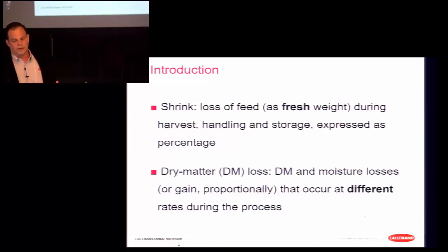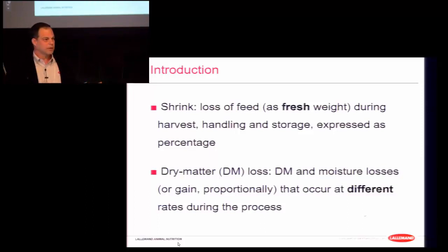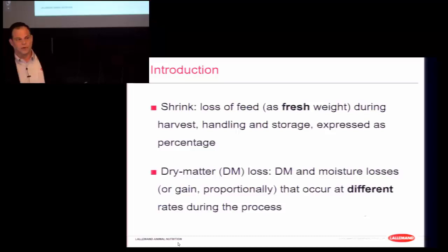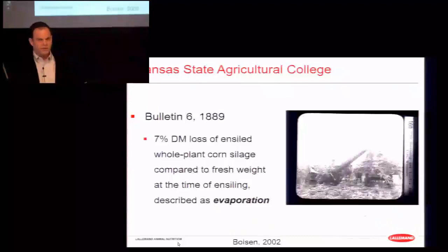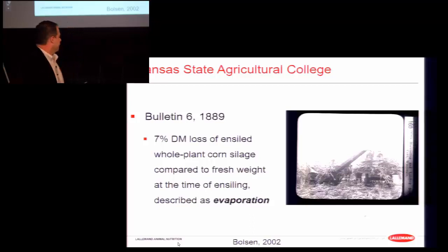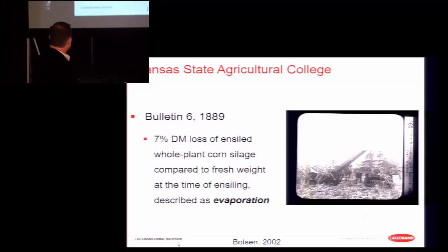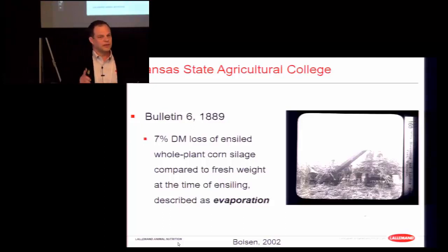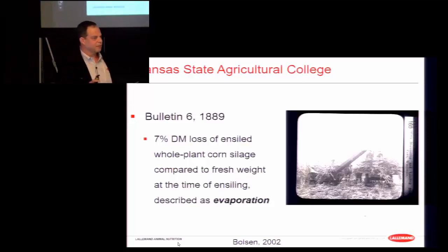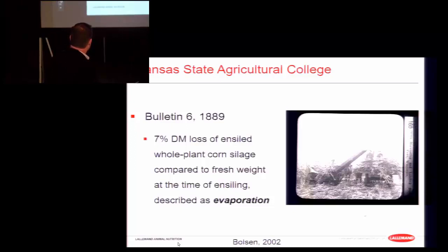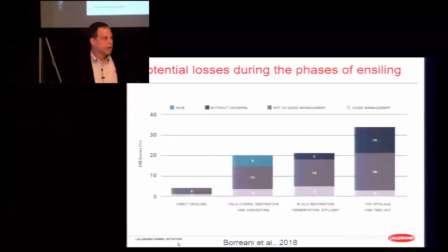For instance, if we have water damage by the wall on a bunker, we'll have a lot of nutrient dry matter losses but also increased moisture. A historical note: Dr. Keith Bolson cited a bulletin from Kansas State Ag College from 1889, which reported 7% dry matter losses of ensiled whole plant corn silage compared to fresh weight at time of ensiling, described as evaporation. When we make silage, there will always be some losses — pre-ensiling, during wilting, or during packing and covering.